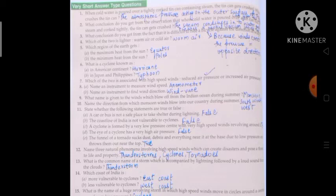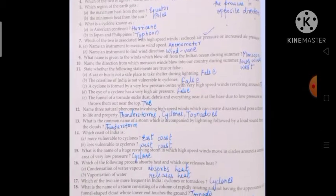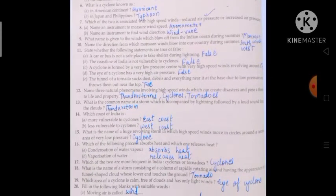Fourteen: which coast of India is A) more vulnerable to cyclones? Answer is east coast. B) less vulnerable to cyclones? Answer is west coast. Fifteen: what is the name of a huge revolving storm in which high speed winds move in circles around a center area of a very low pressure? Answer is cyclone.